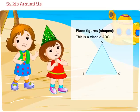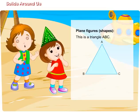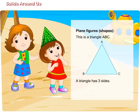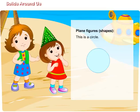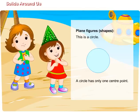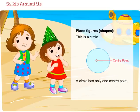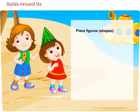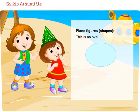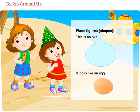This is a triangle. We can name it as ABC. A triangle has three sides. This is a circle. A circle has only one center point. This is an oval. It looks like an egg.